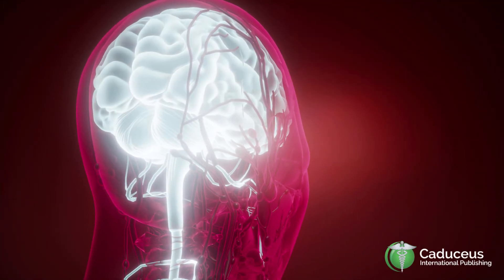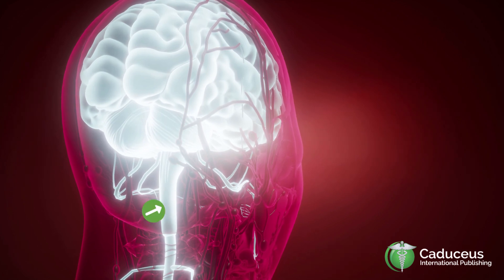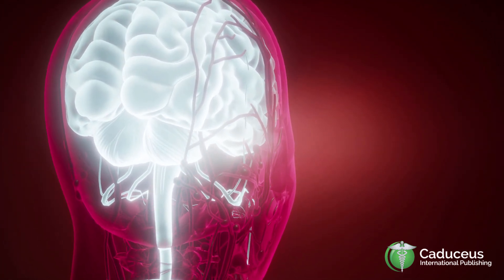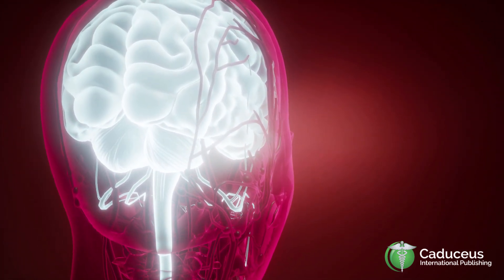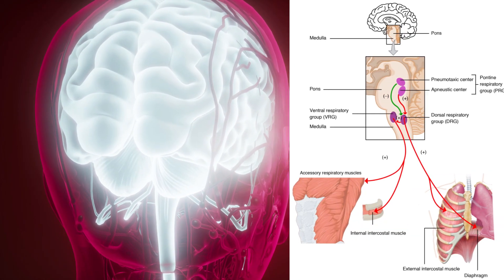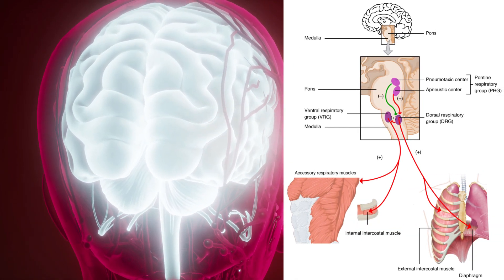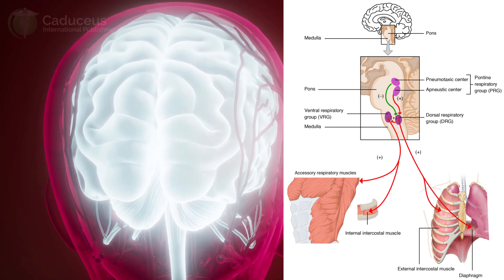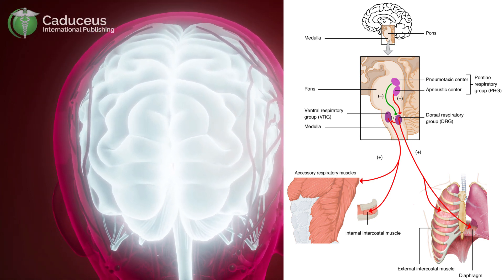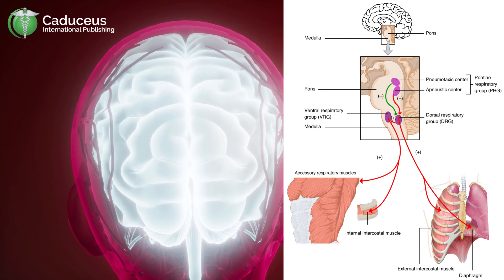The involuntary action of breathing is controlled by the medulla and pons. Both the medulla and pons have areas in them called the respiratory centers. The medulla oblongata is the literal continuation of the spinal cord into the skull. It forms the lowest part of the brain stem and aids in the control of the lungs.